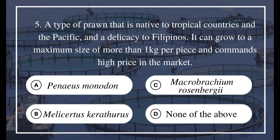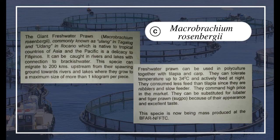Question 5: A type of prawn that is native to tropical countries and the Pacific and a delicacy to Filipinos. It can grow to a maximum size of more than one kilogram per piece and commands a high price in the market. A) Penaeus monodon, B) Melicertus carinicauda, C) Macrobrachium rosenbergii, D) none of the above. The answer is C) Macrobrachium rosenbergii.